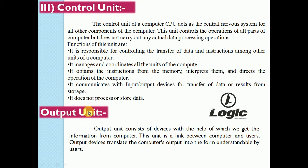The last unit is the output unit. The output unit consists of devices with the help of which we get information from the computer. This unit is a link between the computer and the user. Output devices translate the computer's output into a form understandable by the user and give the final result to the user.